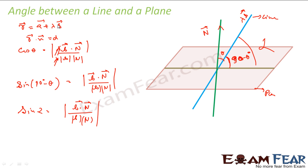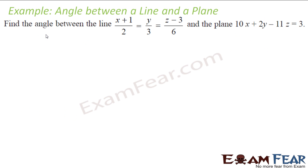So sin of the angle between the line and the plane is b·n over |b||n|, where the line is r = a + λv and the plane is r·n = d. Let us take one example on this — we have to find the angle between this line and this plane. First I have to convert the line into r = a + λv form.